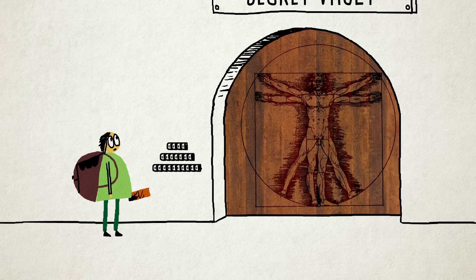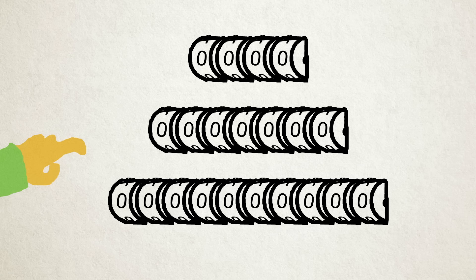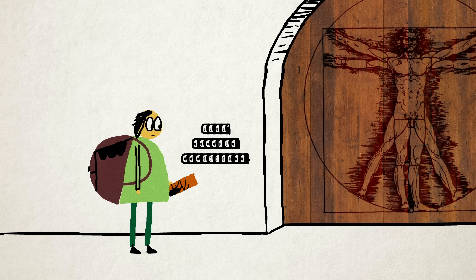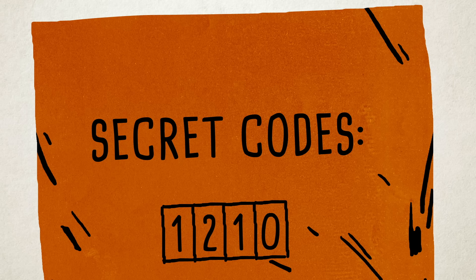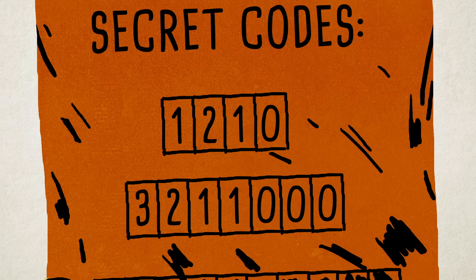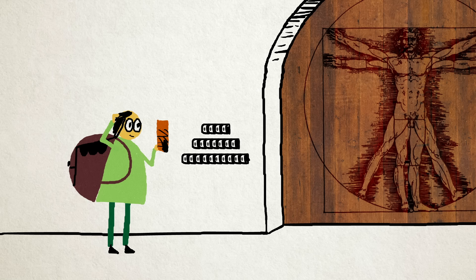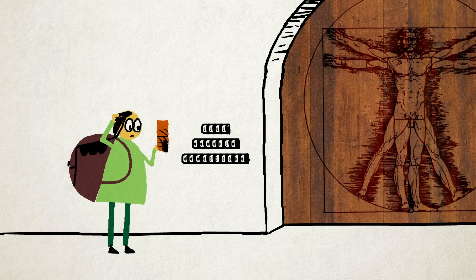You've found Leonardo da Vinci's secret vault, secured by a series of combination locks. Fortunately, your treasure map has three codes, 1210, 3211000, and... hmm, the last one appears to be missing. Looks like you're going to have to figure it out on your own.